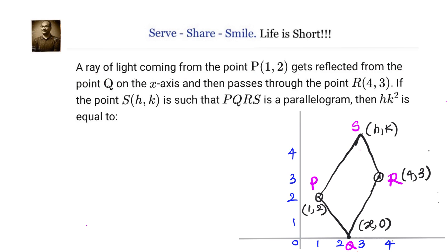Let us first find the angle θ between QR and the x-axis, and between PQ and the x-axis. The slope of QR equals tan θ, which is (y₂ − y₁)/(x₂ − x₁) — that is (3 − 0)/(4 − x), giving slope of QR = 3/(4 − x).